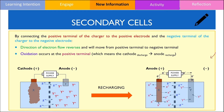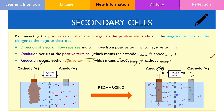Hence, the cathode becomes the anode when the secondary cell is recharging. However, please bear in mind that this anode is positively charged. In contrast, since electrode Y is gaining electrons during the recharging process, it now becomes the site of reduction and is thus the cathode. The polarity of the cathode when it recharges is negative.